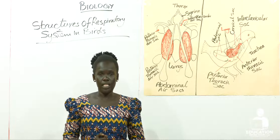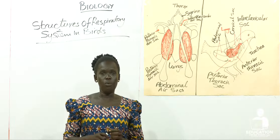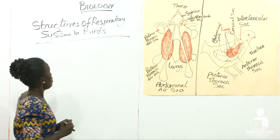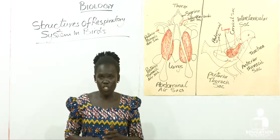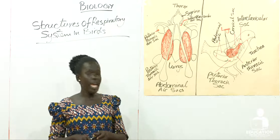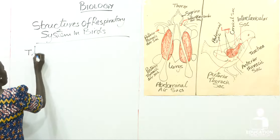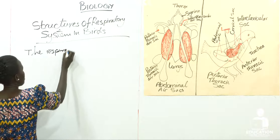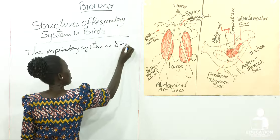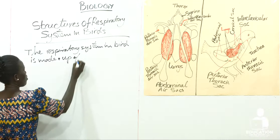So we want to see the respiratory system in birds and how it is built up. The respiratory system in birds is built up of the mouth, nostril, pharynx, trachea, nine air sacs, and lungs.